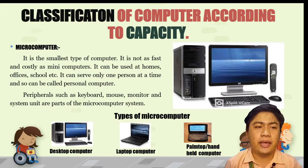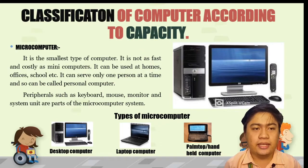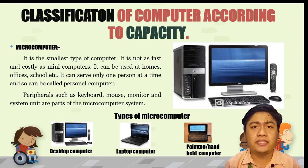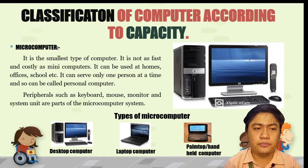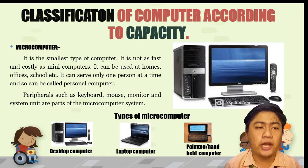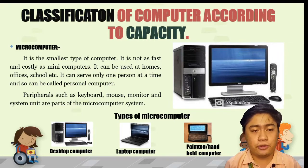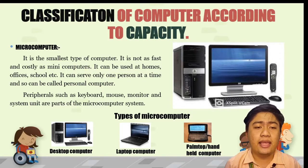The microcomputer is the smallest type of computer — not as fast and costly as minicomputers. It can be used at homes, offices, schools, etc. It can serve only one person at a time and so can be called a personal computer. Peripherals such as keyboard, mouse, monitor, and system unit are part of the microcomputer system. Examples include the desktop computer, laptop computer, and the handheld computer.